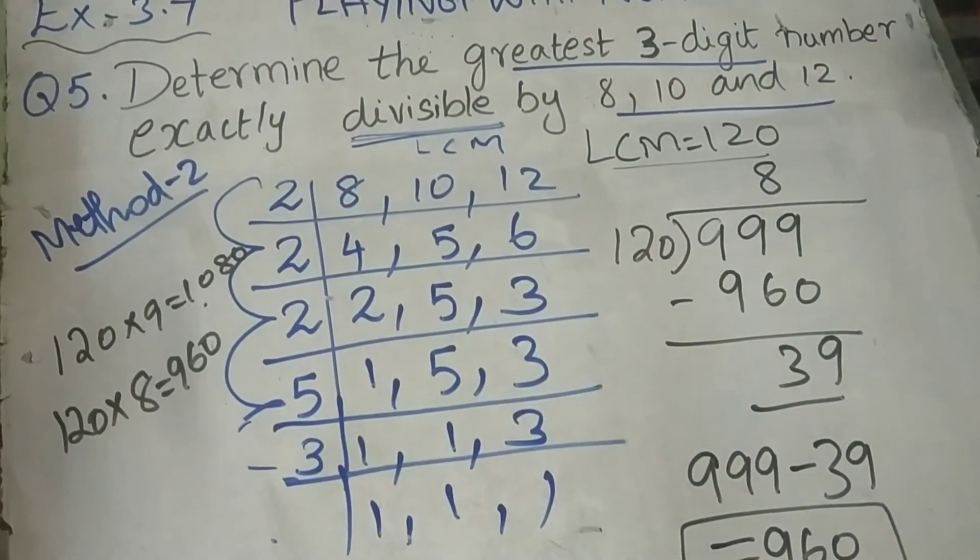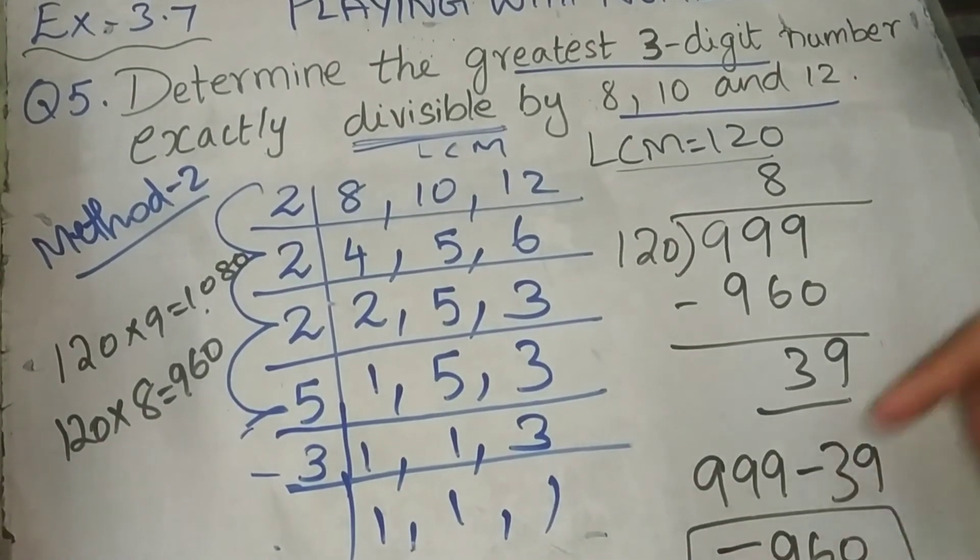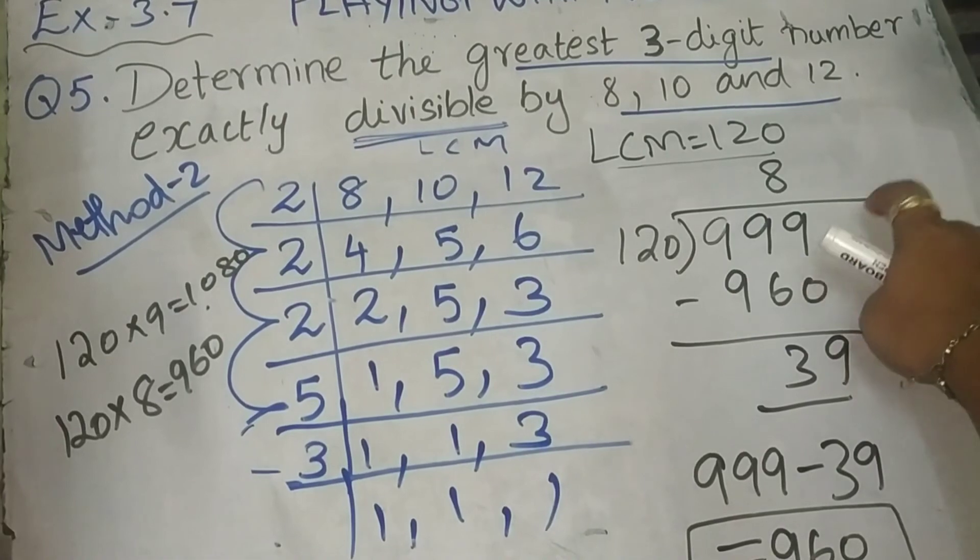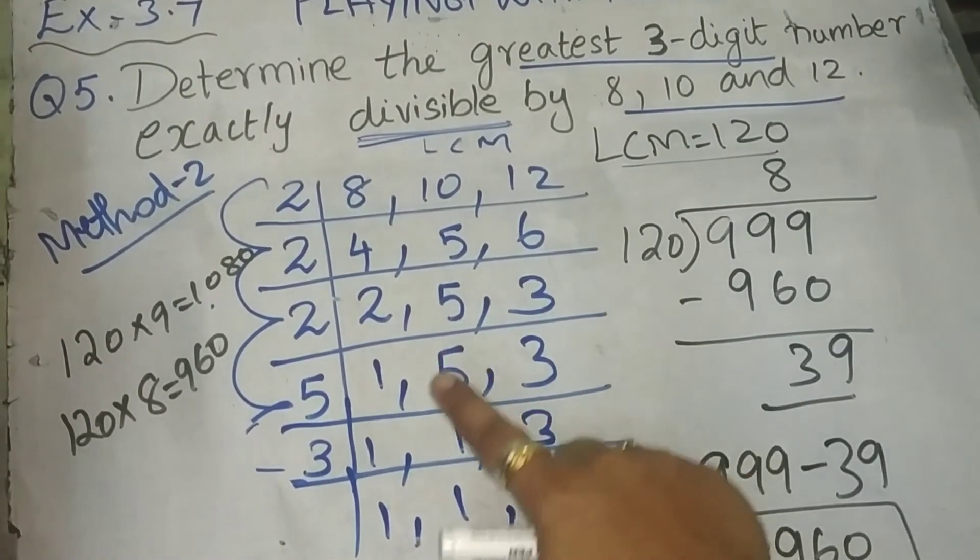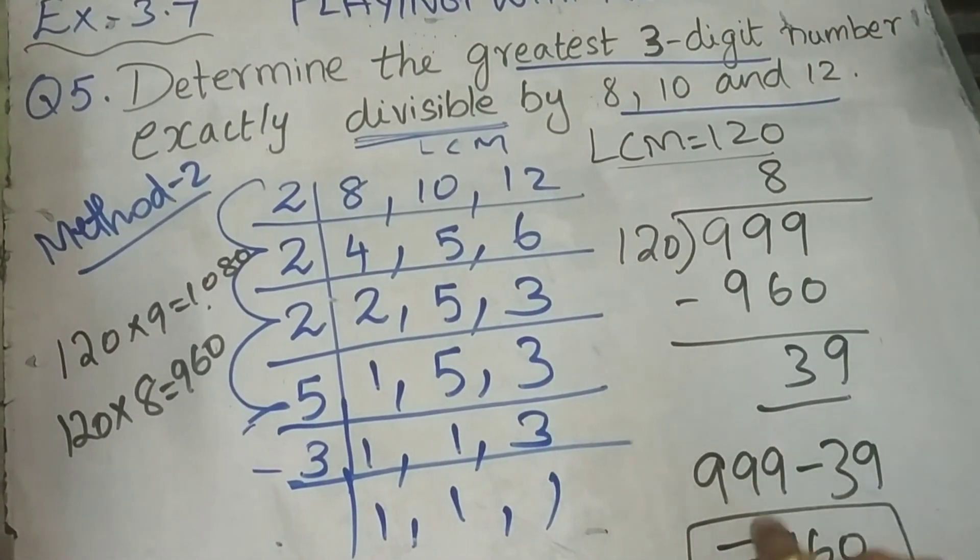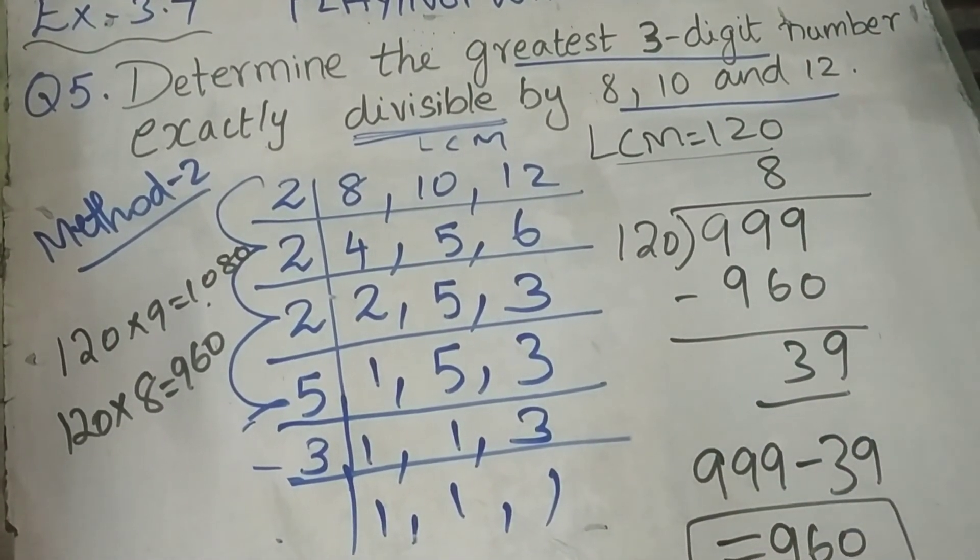You may ask, in the previous sum, we have done the subtraction and then whatever answer we are getting, we have added in the dividend. That is the case of smallest 3 digit number. So, if they ask greatest 3 digit number, you have to subtract and you have to find the answer.